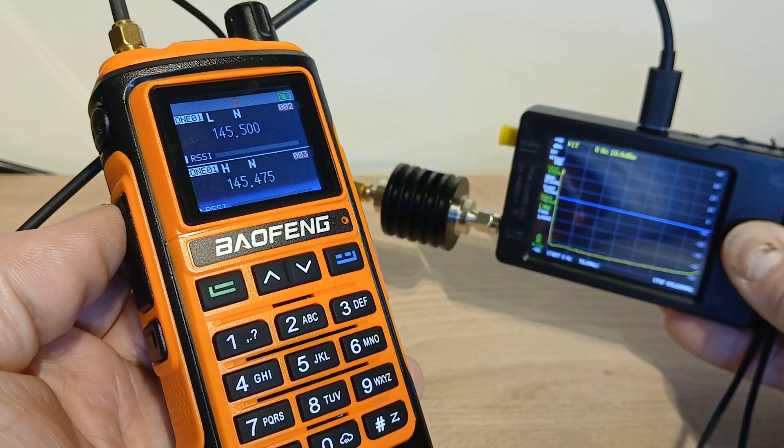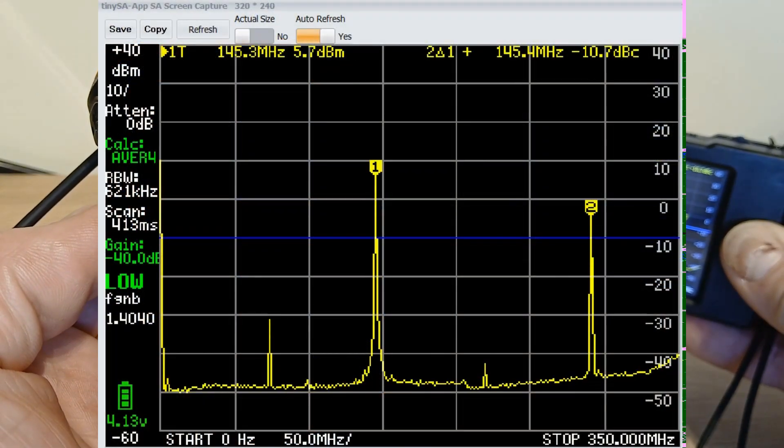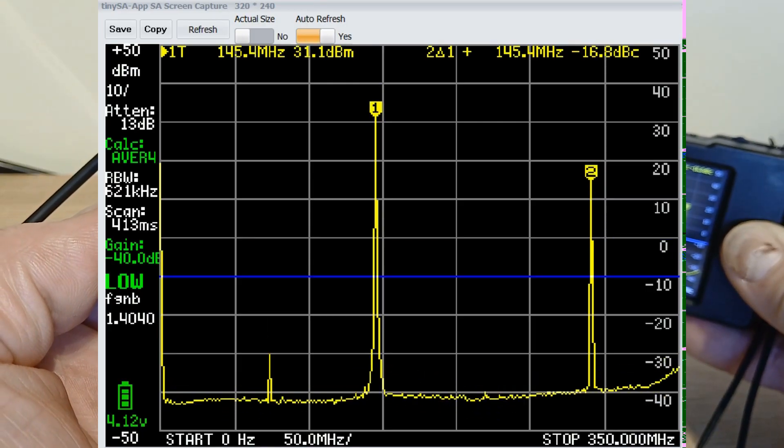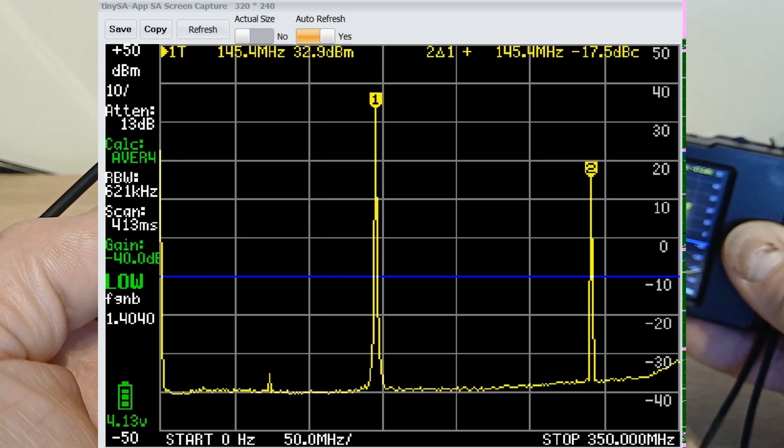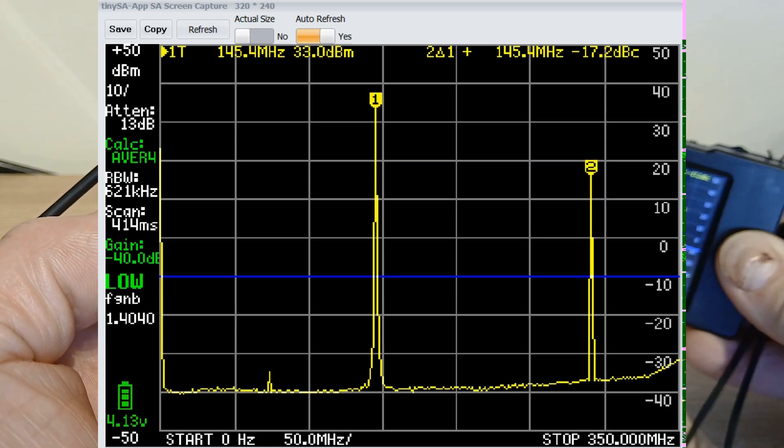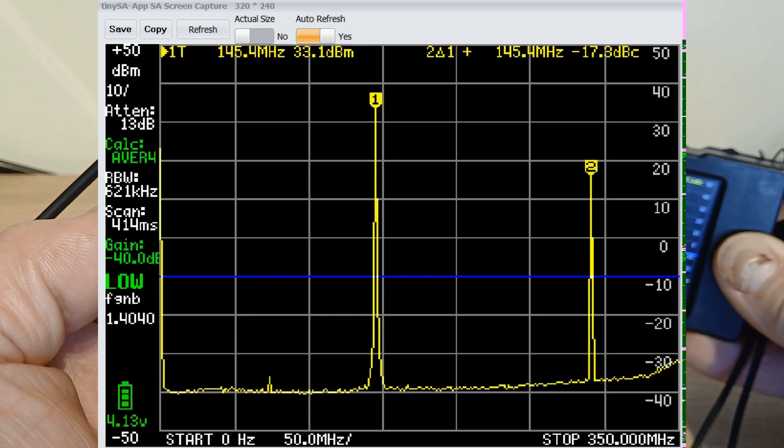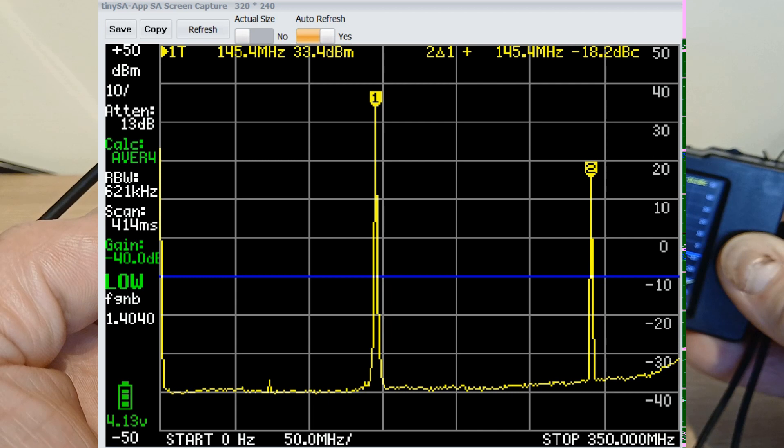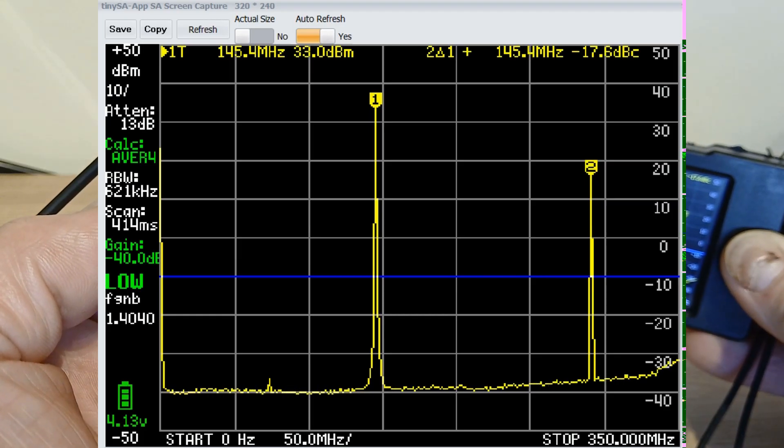Next up is the Baofeng UV17 Pro. And straight away you can see that's a massive fail. The fundamental top left there, the number one marker is 32.9 decibels. And then you can see our blue line there which we're hoping that the second one's going to be below, but you can see our number two pointer, our first harmonic, is coming in at minus 17 decibels underneath the fundamental. So yeah, that one's a fail, unfortunately.